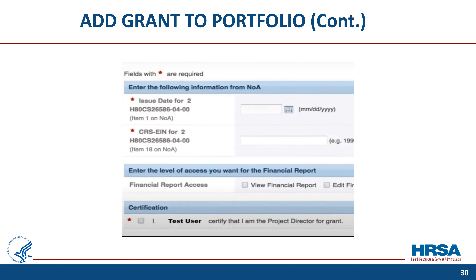On the Add Grant to Portfolio screen, you will select your role for the grant — either project director or request grant access. After selecting to register as project director, the register as project director select grant page will appear. Select the register link next to the grant for which you want to register as project director. You will then be taken to the register as project director page, where the EHBs will ask you questions to validate your role as the PD. It will cross-reference the name on the NOA with the name on your EHBs profile — the two names must be a perfect match. Then it will ask for the date the NOA was released and your CRSEIN number, found in box 18 of your latest NOA. Click the certification box and the save and continue button.